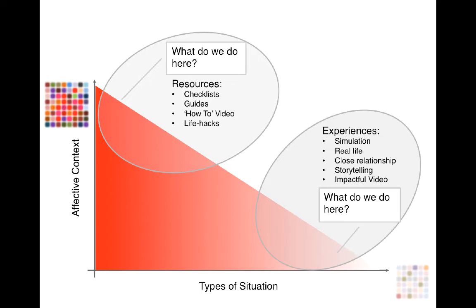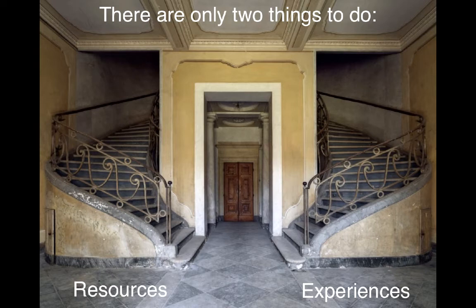But in organizations, we often encounter things that people don't care about but that we want them to care about. In that case, you have to design experiences which actually make them care and therefore make them learn — things like simulations, storytelling, or actual practical real-life experience. So really there are only two things to do in learning: design resources where people care about something, or design experiences where they don't. How do you know which to do? You spend time with the audience, and mapping those things with them will tell you where you need a resource and where you need an experience.